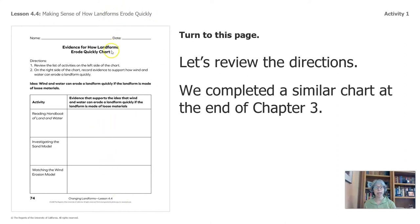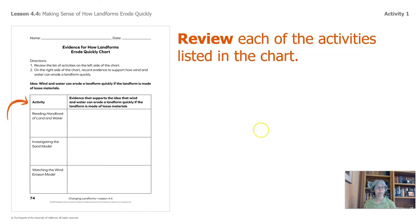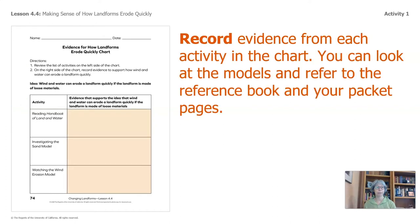Turn to this page in your packet — Evidence for How Landforms Erode Quickly chart. Let's review the directions. We completed a similar chart at the end of chapter three. We are reviewing three activities that have taken place in the videos: the reading of the Handbook of Land and Water, the demonstration in the video of the sand model, and a video of the wind erosion model. We will record evidence from each of these activities in the chart. You can look at the models and refer to the reference book and your packet pages — this might be a good place to pause the video and go back to those resources.